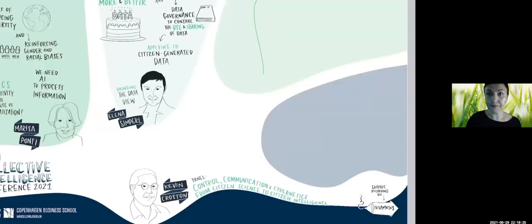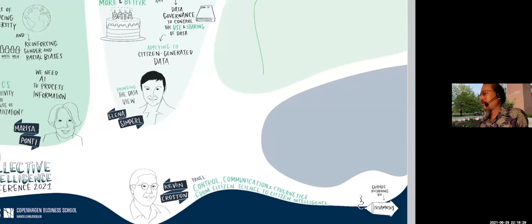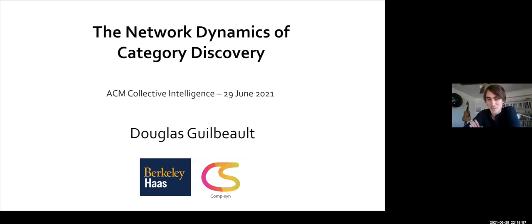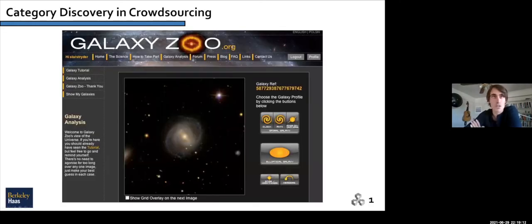He is an assistant professor in the management organizations group at the Haas School of Business at UC Berkeley. And he is going to be talking today about the network dynamics of category discovery. Hi, everyone, it's really great to be here. It's a special opportunity for me to do some of my theoretical work in these conversations of citizen science. But I want to start off with an anecdote with which some of you in the space are likely familiar with, but it really propelled my interest in citizen science, which was the galaxy zoo discovery of the green pea galaxy.